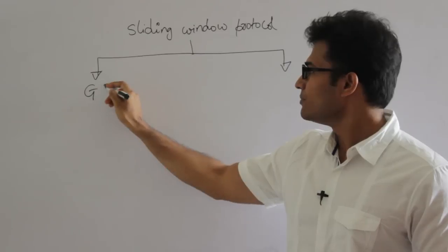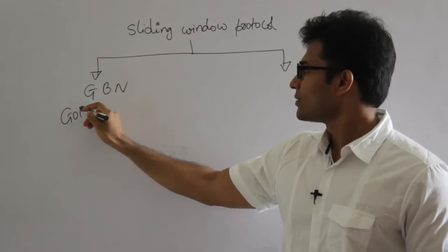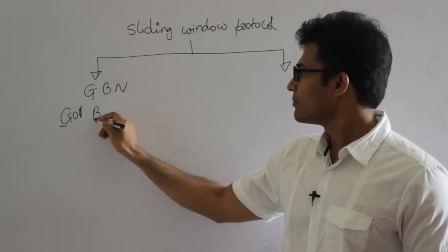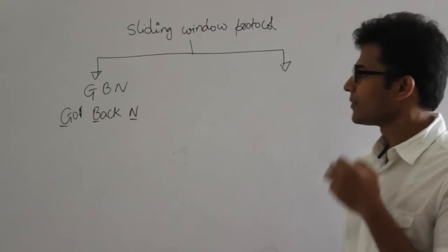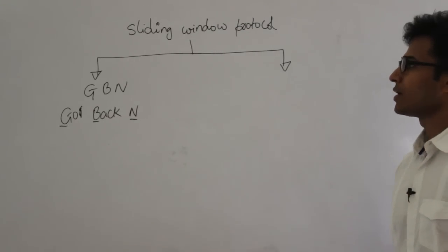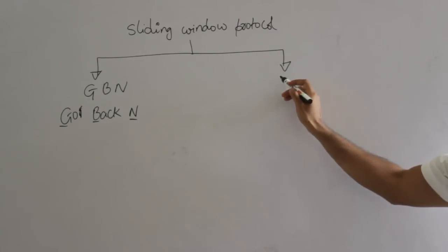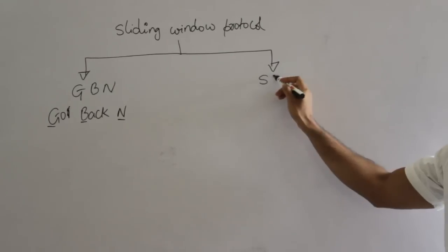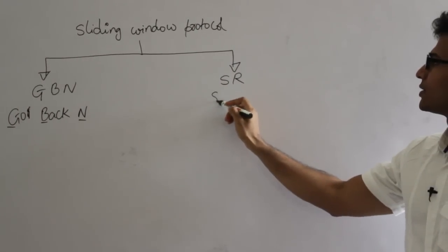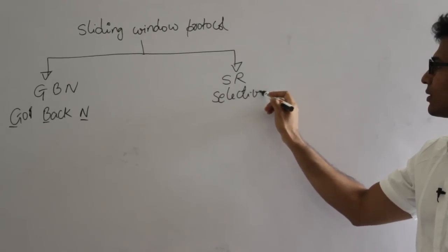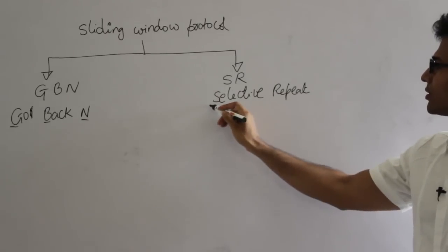One is GBN, which is Go Back N — G for Go, B for Back, and N. So Go Back N is one practical protocol implementing sliding window protocol. The other one is SR, which stands for Selective Repeat.